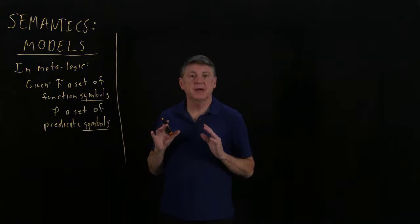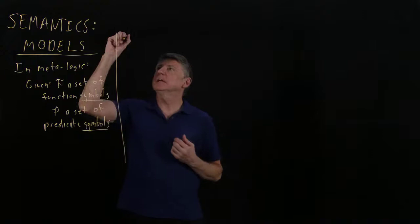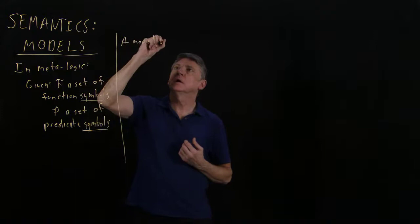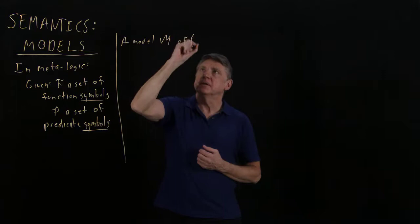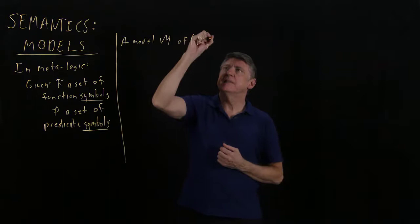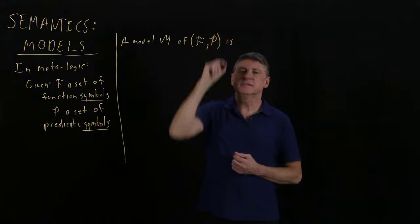So we will then define what we mean by a model. And a model doesn't stand on its own. It specifically will say a model M, and it's of the given set of function symbols and the given set of predicate symbols.